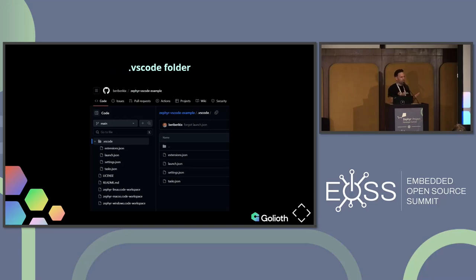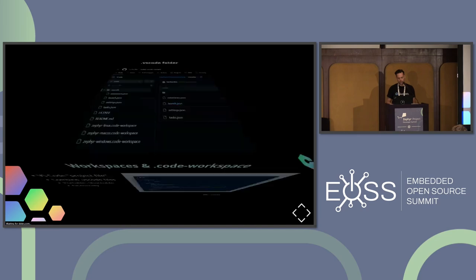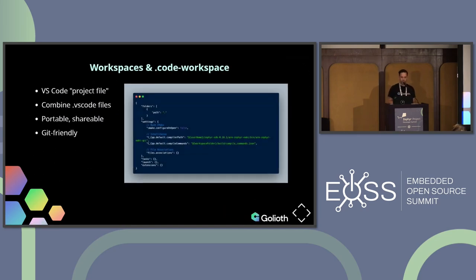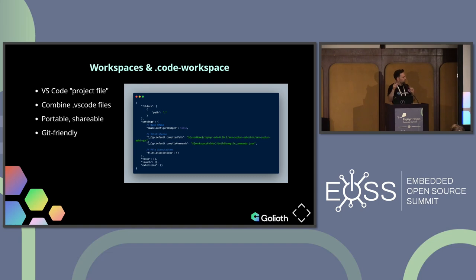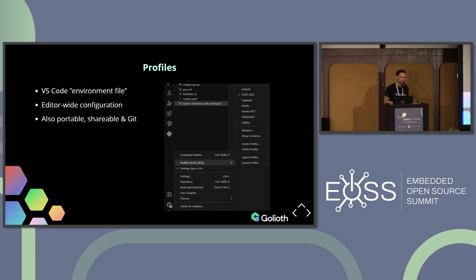With all those different JSON files, if you put them in a special folder called .vscode at the top level of your directory, VS Code will scan for them, automatically load them, and run them as part of your environment. That's how you can pre-configure with the .vscode folder and all the specialized JSON files. But there's another way I find a little simpler: VS Code doesn't quite have a concept of a project, but it has a concept of a workspace. It's a single .code-workspace file where you can put all those individual configurations in one file to manage.